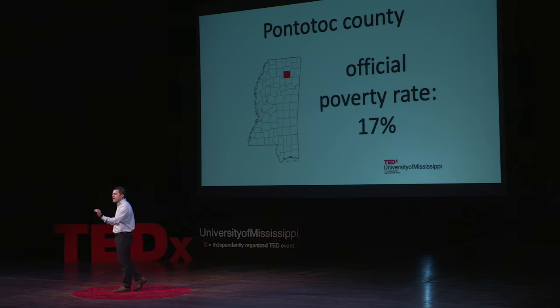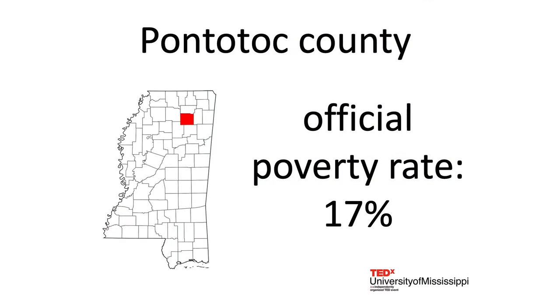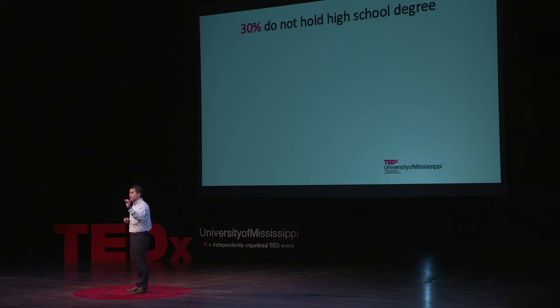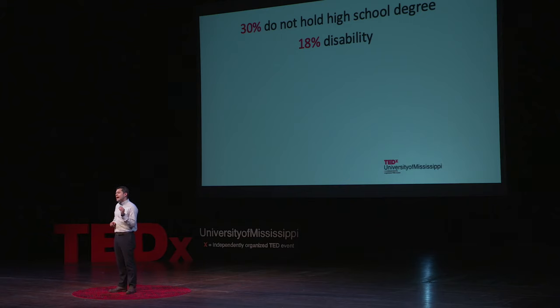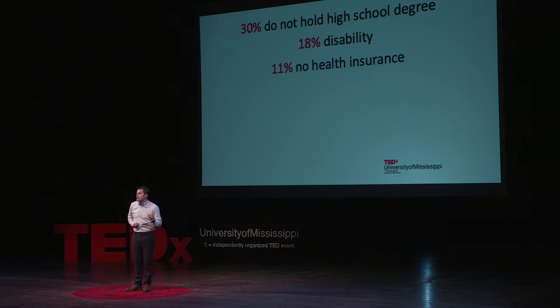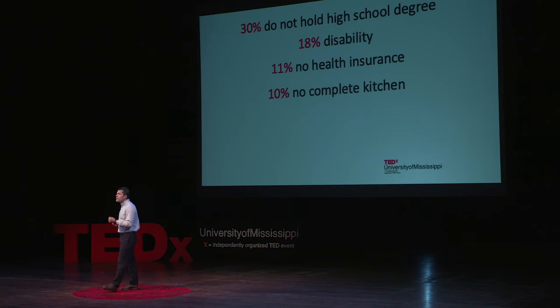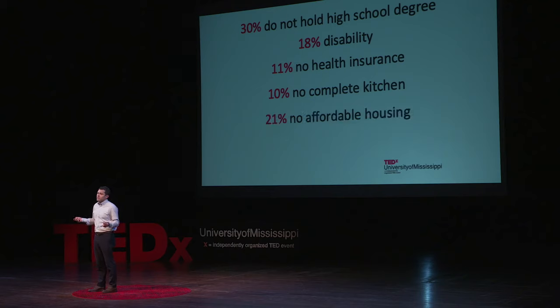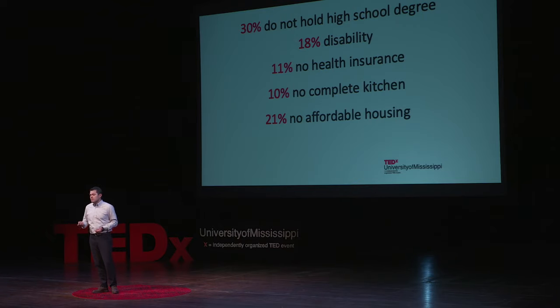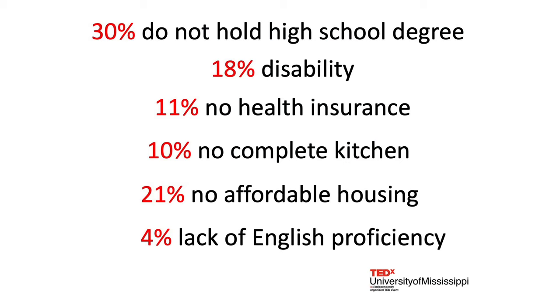Let's take Ponerno County as a specific example. Ponerno County has a poverty rate of 17%, one of the lowest in the state of Mississippi. But by using our methodology, it was one of the highest. Why? Because more than 30% of its population 25 years and over do not hold a high school degree. More than 18% of its population has a disability. More than 11% do not have health insurance coverage. More than 10% do not have a complete kitchen facility. 21% have monthly housing costs representing more than 30% of their income. And approximately 4% speak English less than very well.